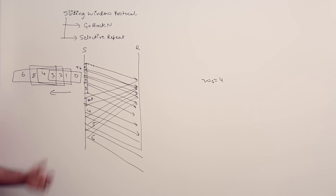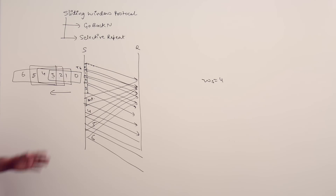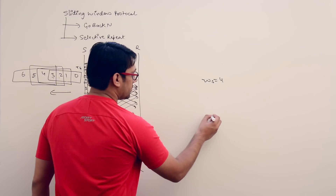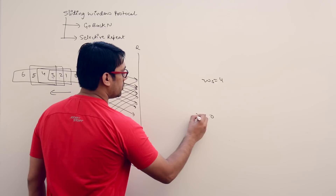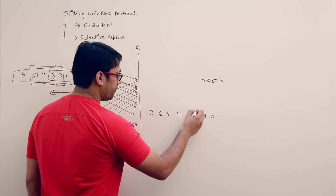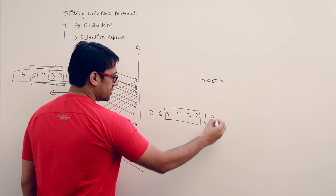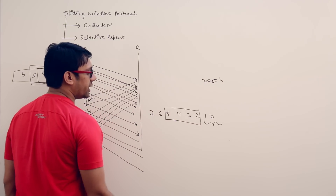As soon as packet number 1 is transmitted and acknowledged, we slide the window and transmit packets 2, 3, 4, and 5. So in the sliding window protocol, if we have packets 0, 1, 2, 3, 4, 5, 6, and 7, and the window is currently at some position, then the packets to the right of the window are already transmitted, received, and acknowledged.